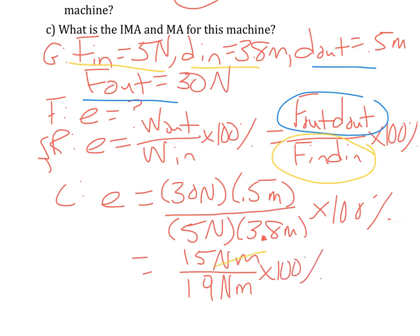You can see the newton meters cancel out, and so that's going to give me 15 divided by 19 times 100. So my machine is about 79% if we round up to the nearest whole number, or 78.9%.